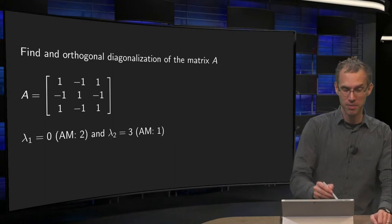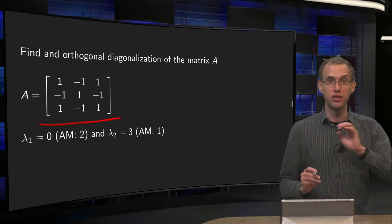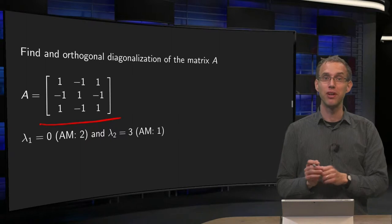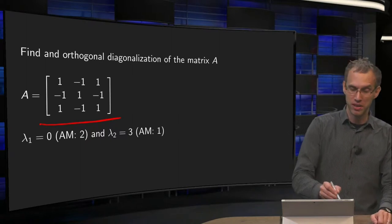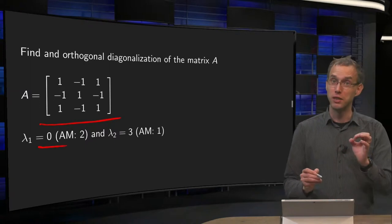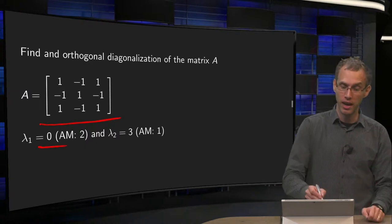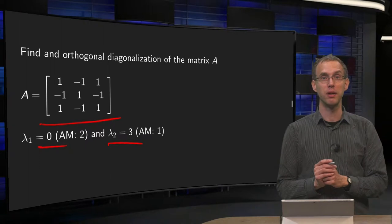We'll take a 3 by 3 matrix A and skip over the computation of the eigenvalues. You need a characteristic equation for that, and then you will find lambda is 0 with algebraic multiplicity 2, and lambda equals 3 with algebraic multiplicity 1.